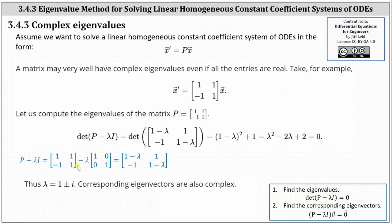In this case, P minus lambda I results in the two-by-two matrix with entries one minus lambda, one, negative one, and one minus lambda. So now we have the determinant of this two-by-two matrix equals zero, where the determinant is equal to one minus lambda times one minus lambda minus one times negative one, which results in the square of one minus lambda plus one equals zero. Multiplying this out, we end up getting lambda squared minus two lambda plus two equals zero, which is not factorable. Solving using the quadratic formula or completing the square, we get lambda equals one plus or minus i.